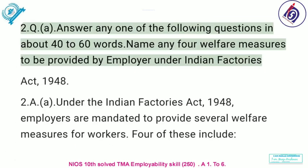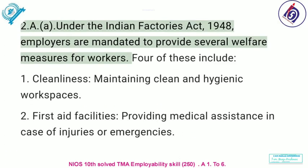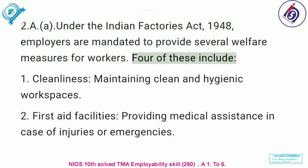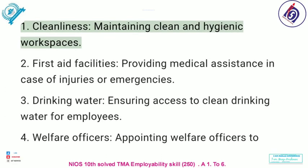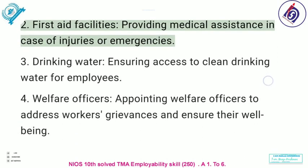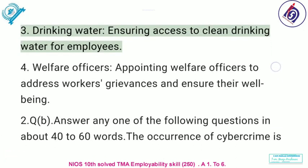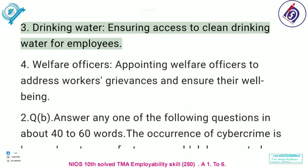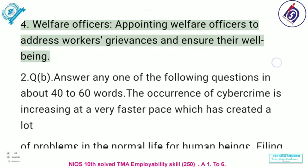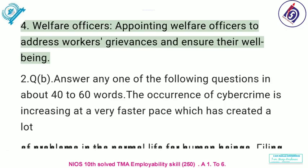Answer any one of the following questions in about 40 to 60 words. Name any four welfare measures to be provided by employer under the Indian Factories Act, 1948. Under the Indian Factories Act 1948, employers are mandated to provide several welfare measures for workers. Four of these include: one, cleanliness — maintaining clean and hygienic workspaces; two, first aid facilities — providing medical assistance in case of injuries or emergencies; three, drinking water — ensuring access to clean drinking water for employees; four, welfare officers — appointing welfare officers to address workers' grievances and ensure their well-being.